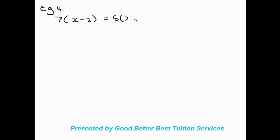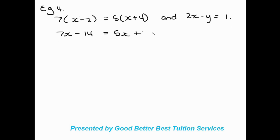Moving on to example number 4: we're given 7(X minus 2) equals 5X plus 4, and 2X minus Y equals 1. We expand the bracket first: 7X minus 14 equals 5X plus 20. There are no other variables so we solve for X. Bringing 5X over gives 2X, and 14 goes over as positive, so 2X equals 34, therefore X equals 17.